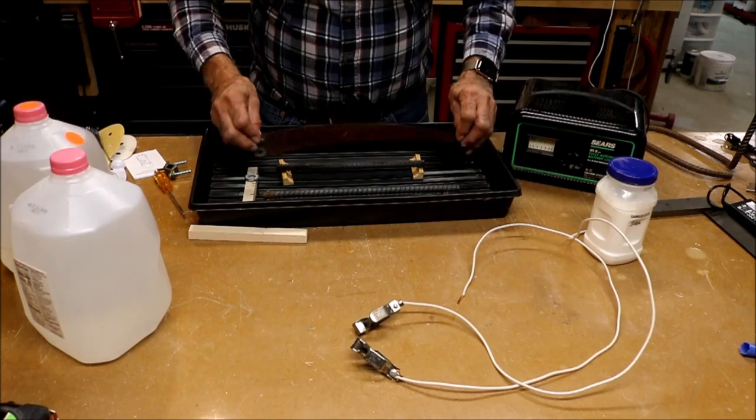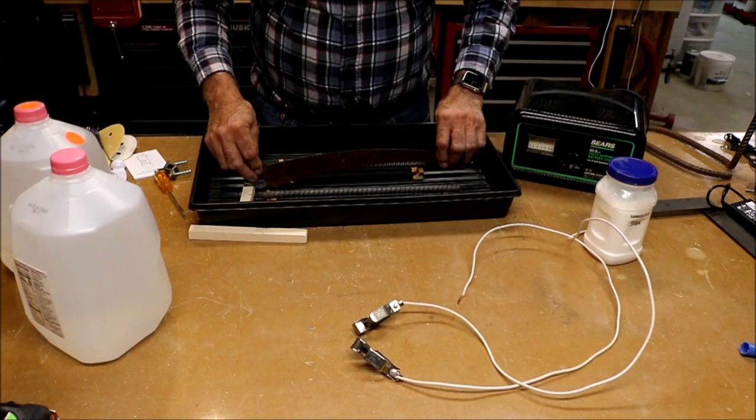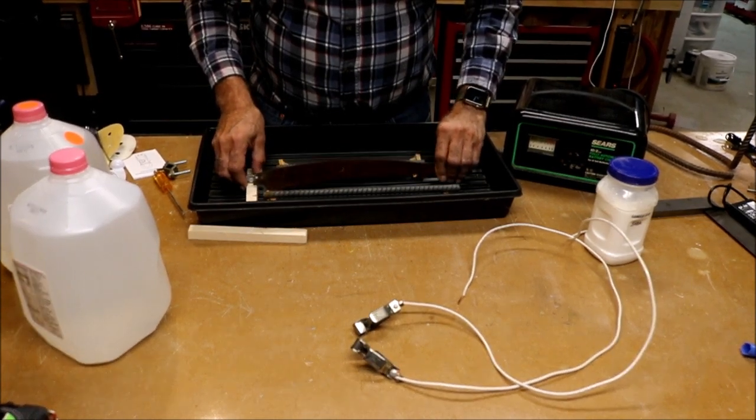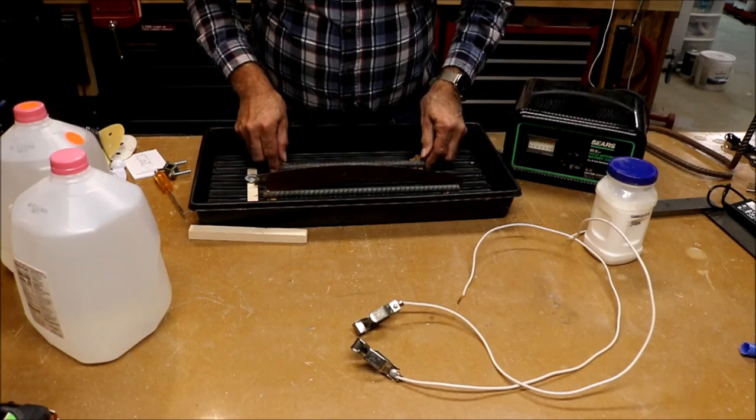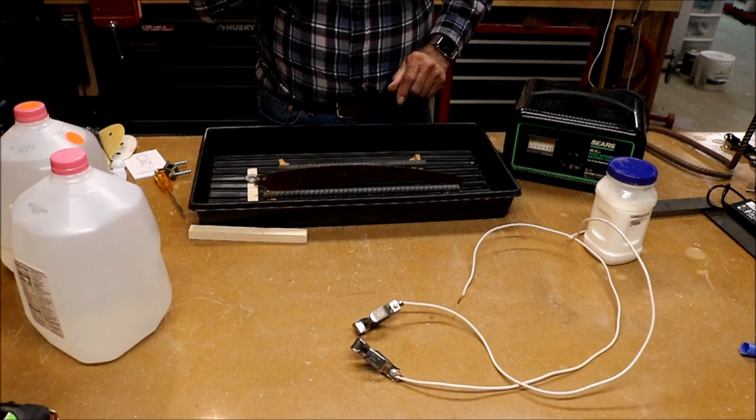And you have to be kind of careful of the geometry a little bit. I'm standing this up this way because the process, the chemical process works line of sight. So I've got two of these rods on either side of the rusted part.